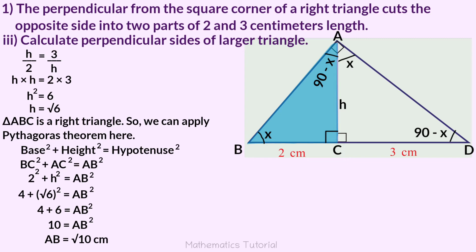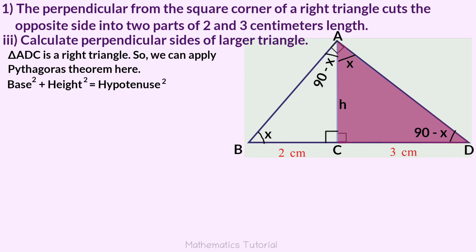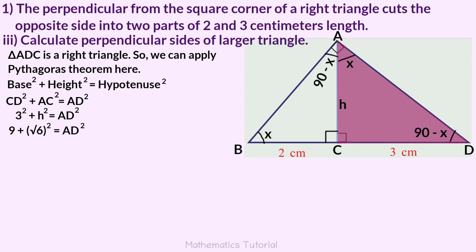AB equals root 10 centimeters. Applying the Pythagorean theorem again: CD squared plus AC squared equals AD squared. That is 3 squared plus H squared equals AD squared. 9 plus root 6 squared equals AD squared. 9 plus 6 equals AD squared. 15 equals AD squared.